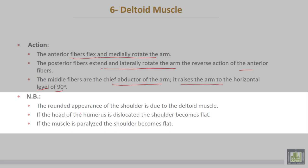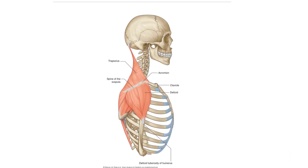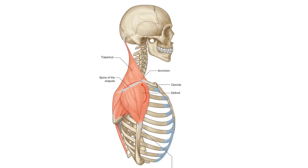The rounded appearance of the shoulder is due to the deltoid muscle. If the head of the humerus is dislocated, the shoulder becomes flat. Or if the muscle is paralyzed, the shoulder also becomes flat. This condition is called flat shoulder. The deltoid muscle originates from the clavicle, acromion process, and lower lip of the crest of the spine, and is inserted into the deltoid tuberosity of the humerus.